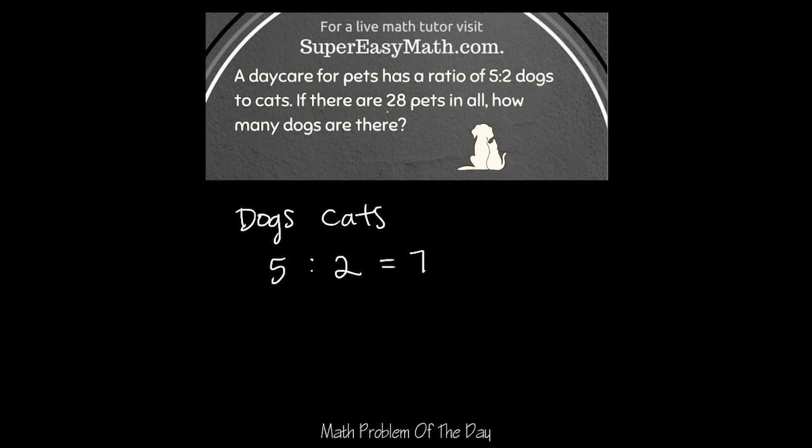Seven is pretty low in comparison to 28. So what I want to do is keep this five to two ratio the same proportionally, but I'm going to change the numbers.